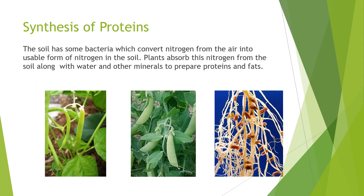How do plants obtain nitrogen for making proteins? Carbohydrates are formed during photosynthesis, but beside this, for making proteins, plants also need nitrogen. Nitrogen is the most abundant gas in the atmosphere — about 78% of nitrogen is present in the air — but this gaseous nitrogen cannot be utilized or absorbed by the plants. So there are some bacteria in the roots of leguminous plants.